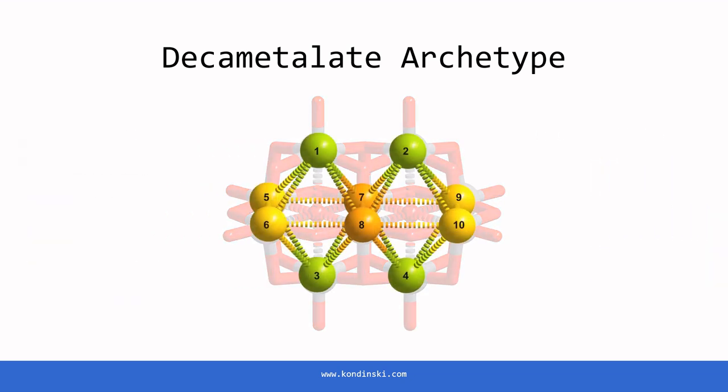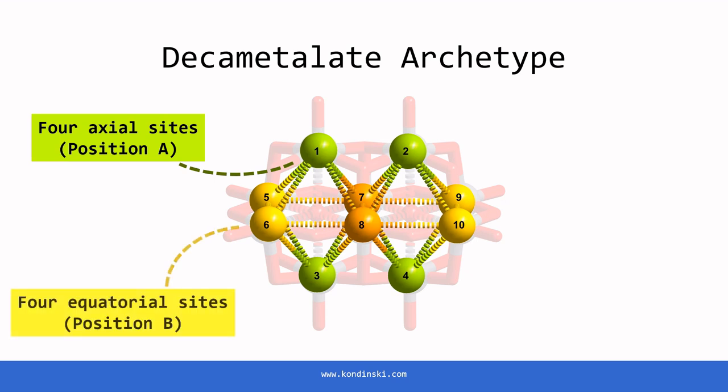When analyzing the decametalate structure, we identify three positionally inequivalent metal positions. There are four axial sites referred to as position A, four equatorial peripheral sites known as position B, and two central metal sites termed position C.